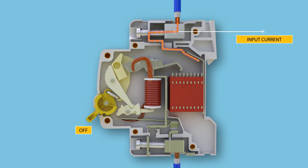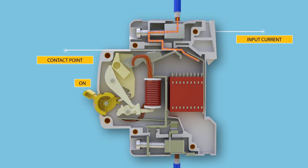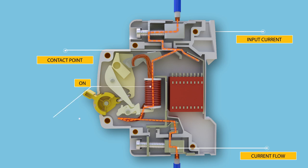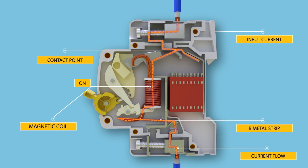Under normal working conditions, the circuit breaker works when the switch operator manually moves from position off to position on. The electric current carrying path, shown in the animation, goes first through the incoming terminal, then the contact point of moving and fixed contacts, then the magnetic coil, then the bi-metallic strip, and finally the outgoing terminal — all arranged in series.